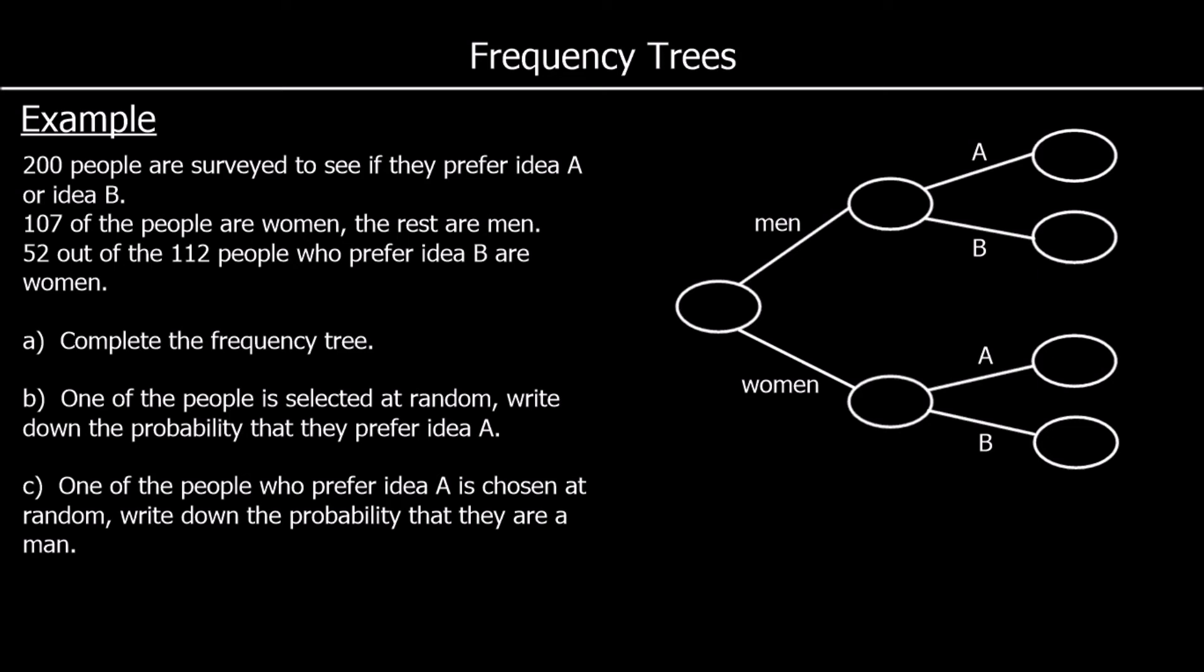Here's another question. We're told 200 people were surveyed to see if they prefer idea A or idea B. So there are 200 people in total. 107 are women. The rest are men. So 200 take away 107 will be 93. So 93 men.